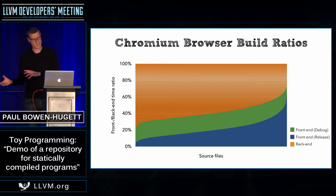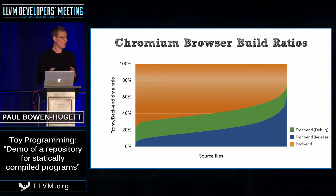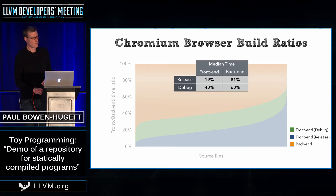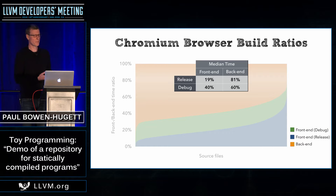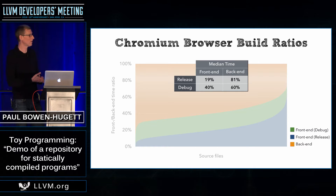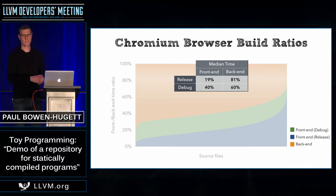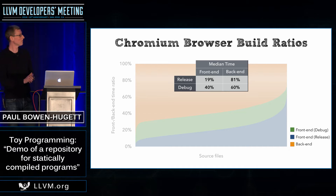As I go through the rest of the slides, bear in mind that orange block is the thing that I'm shooting at. To put some numbers on there, in the release build we're spending roughly 81% of our time in the backend, but we still spend 60% — for this project at least — in the backend of the compiler, which is surprisingly high.